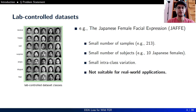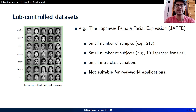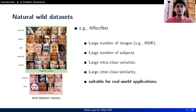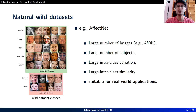For facial expression recognition, we typically deal with two types of datasets. Lab-controlled datasets, such as the Japanese Female Facial Expression dataset, have a small number of samples, subjects, and inter-class variation, making them unsuitable for real-world applications. On the other hand, natural wild datasets such as AffectNet have large numbers of images, subjects, large inter-class variation and inter-class similarity, and because they are larger scale and acquired in an unconstrained environment, they are suitable for real-world applications.